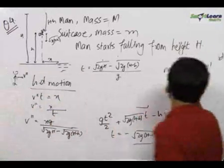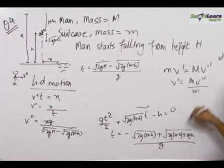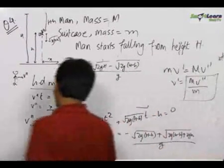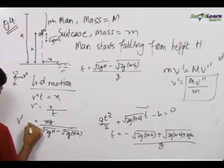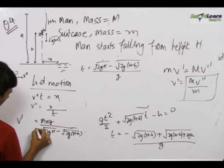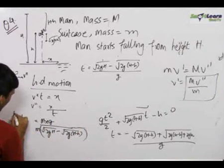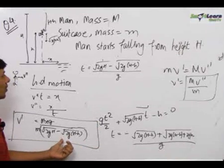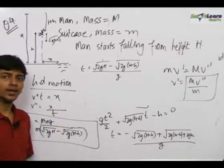We know that v dash = Mv double dash / m by momentum conservation. So we multiply by M upon m to get the minimum velocity to be imparted to the bag by the man so that the man lands in the pond.